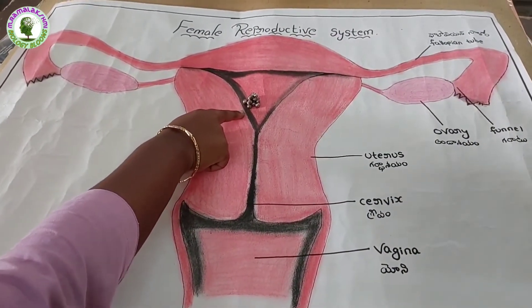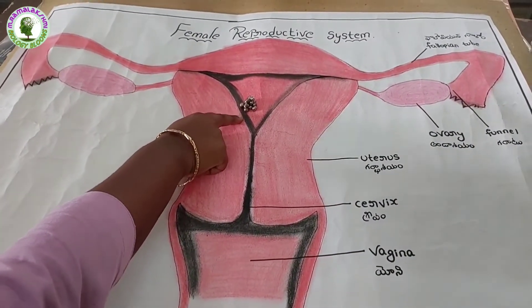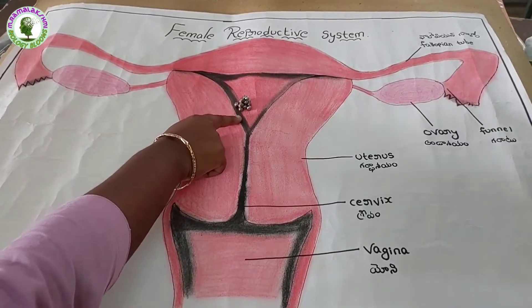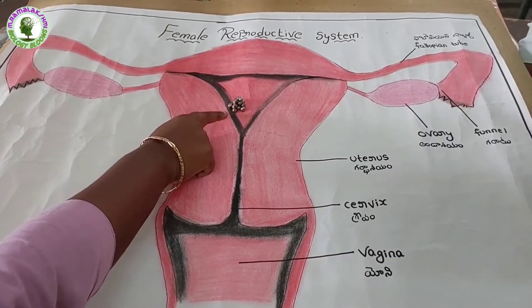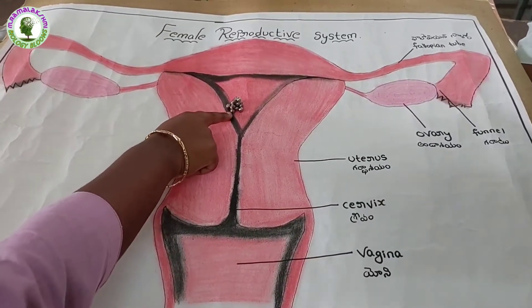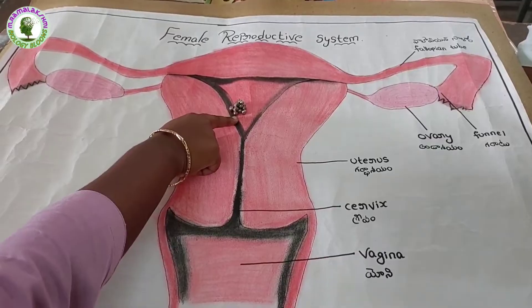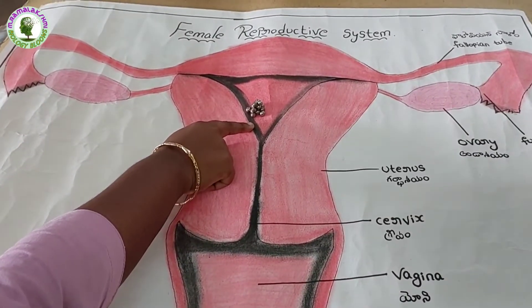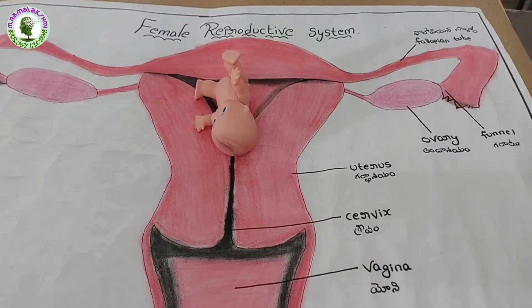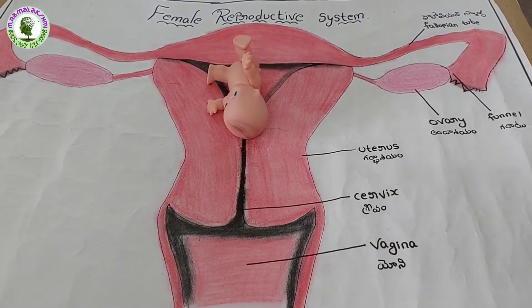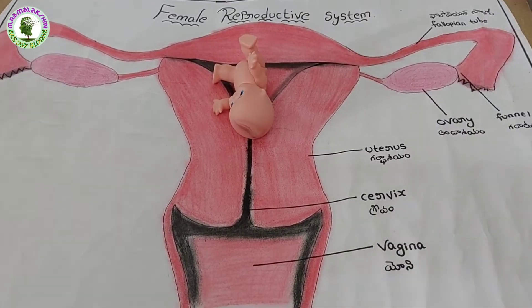Further development of the embryo takes place in the uterus. For full development of the embryo, it takes on average 9 months. This period is called the gestation period.